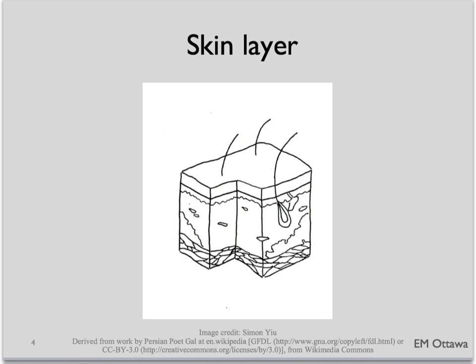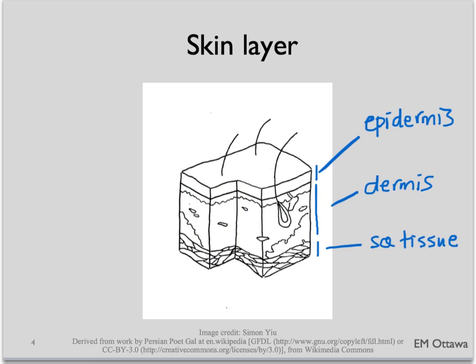We first need to know how deep the burn is. To do that, we need to know what normal skin is composed of. Normal skin has a few layers: the top part is the epidermis, underneath that is the dermis, underneath that is subcutaneous tissue, and under that would be bone, muscle, tendons, and so on.